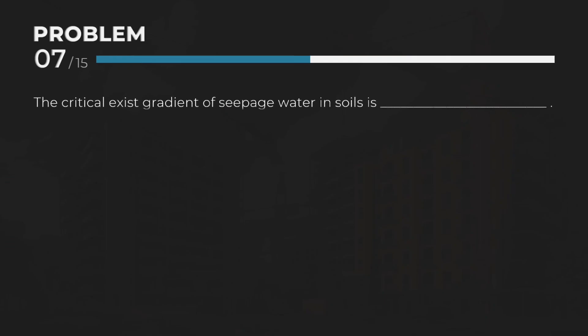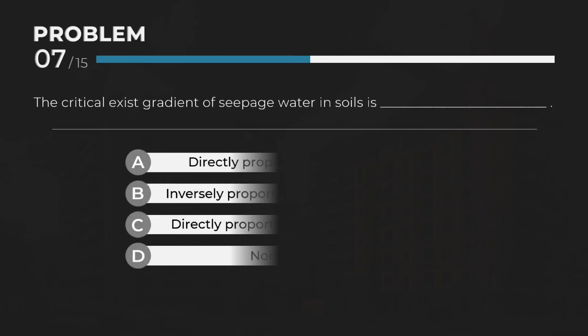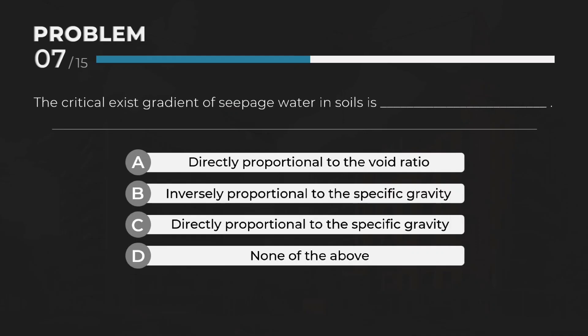The critical exit gradient of seepage water in soils is — Answer: C. Directly proportional to the specific gravity.